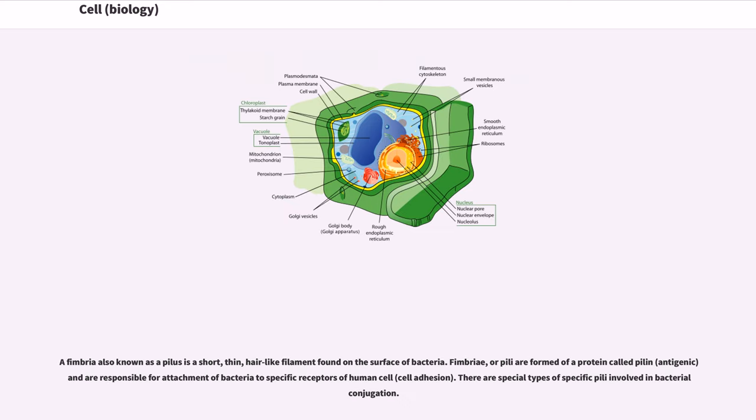A fimbria, also known as a pilus, is a short, thin, hair-like filament found on the surface of bacteria. Fimbriae, or pili, are formed of a protein called pilin, antigenic and are responsible for attachment of bacteria to specific receptors of human cells, cell adhesion. There are special types of specific pili involved in bacterial conjugation.